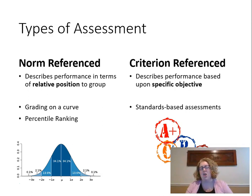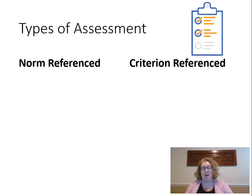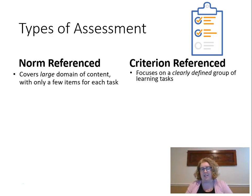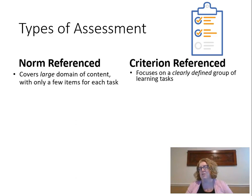You can see that normal curve distribution at the bottom of the screen — that's a norm-referenced test. There are some really important differences between the two. Norm-referenced tests tend to cover a large amount of content with only a few tasks for each one, whereas criterion-referenced tests tend to focus on clearly defined tasks.